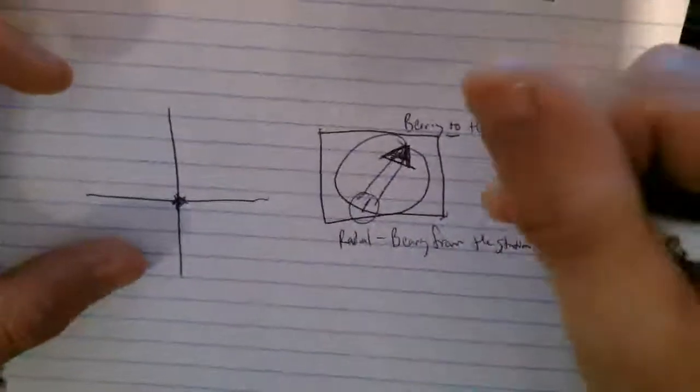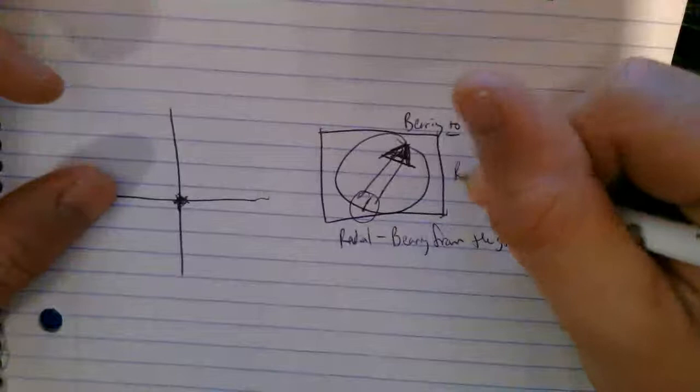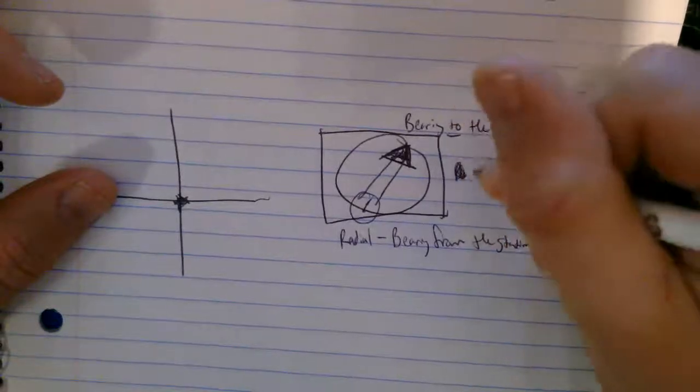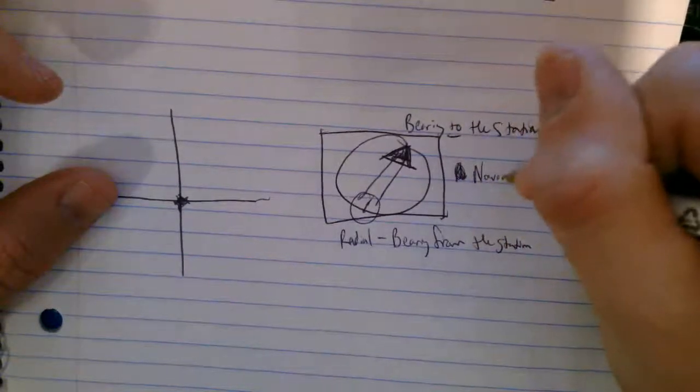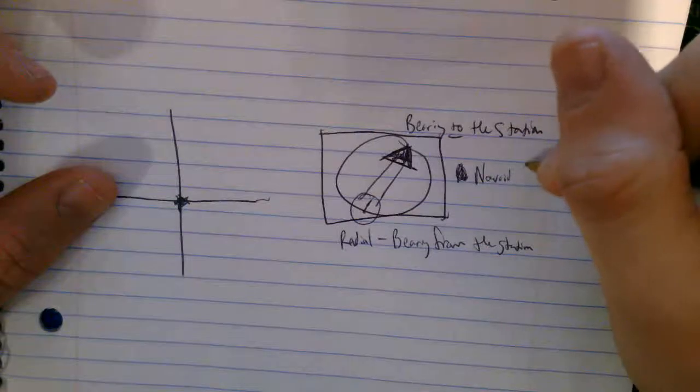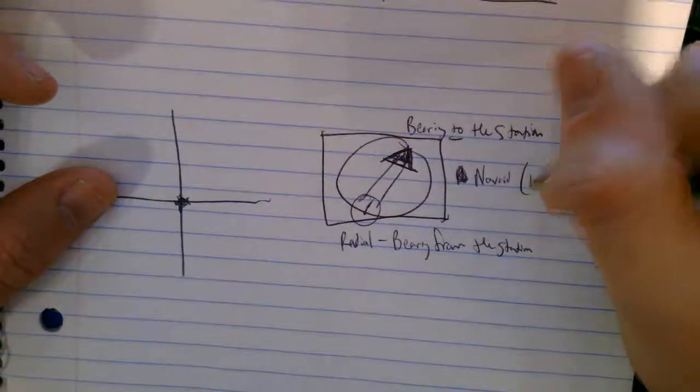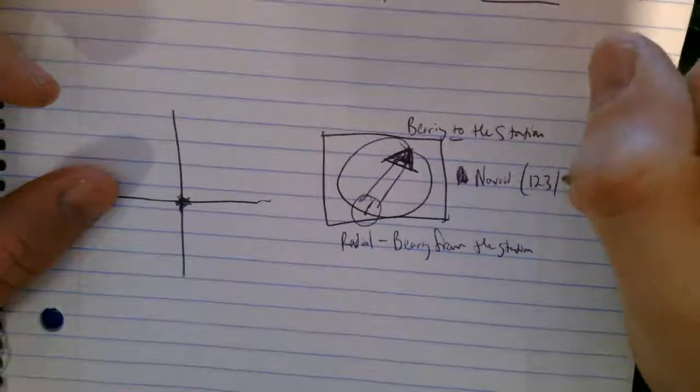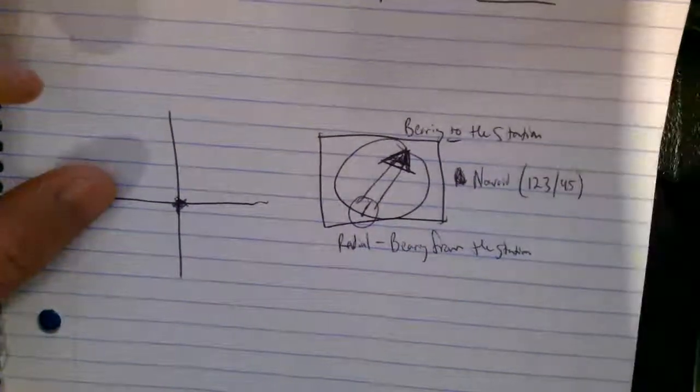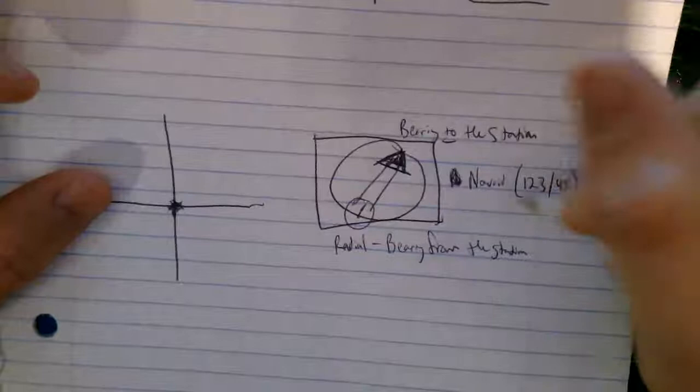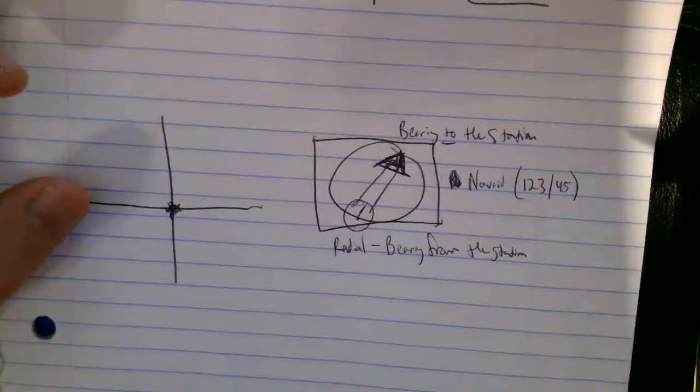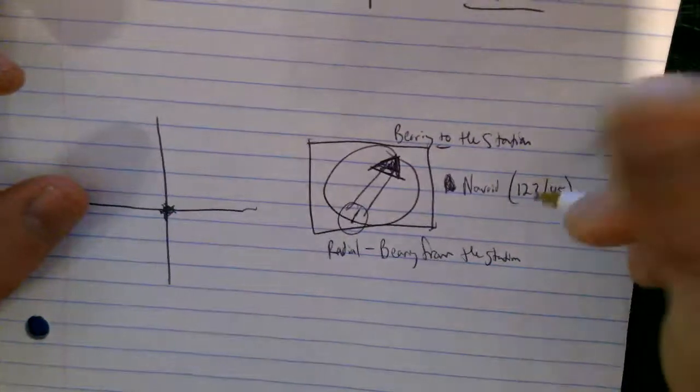And the only other thing I'd say is if they ever say the NavAid's name, and then in parentheses they give you like 1, 2, 3, 4, 5, something like that. If it's packaged together like this, what they're doing is they're giving you a radial and a DME, okay?